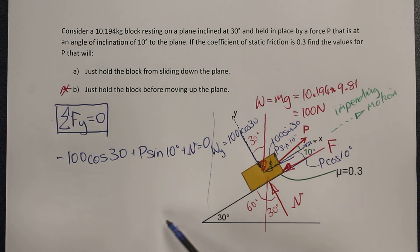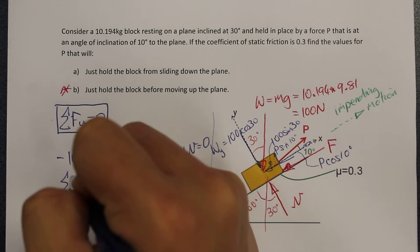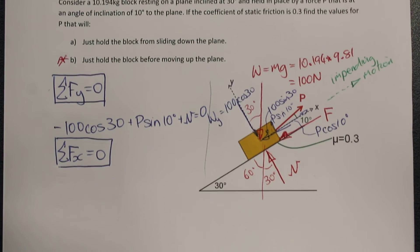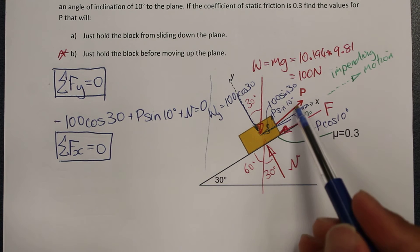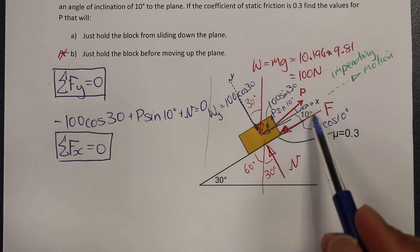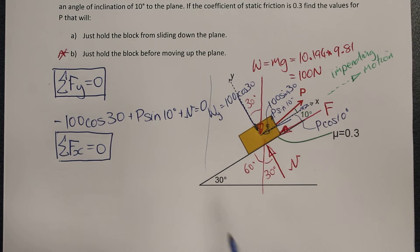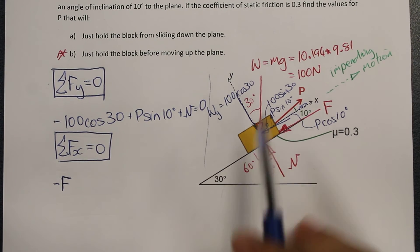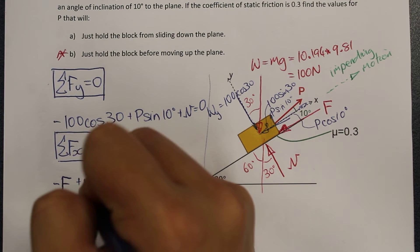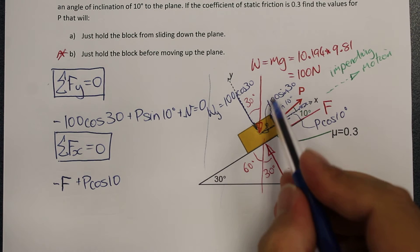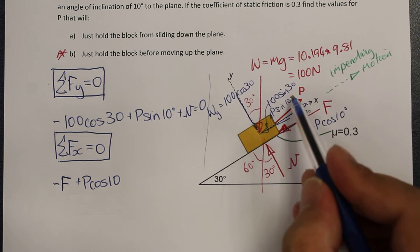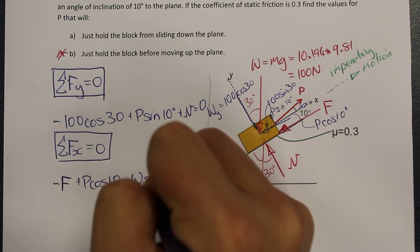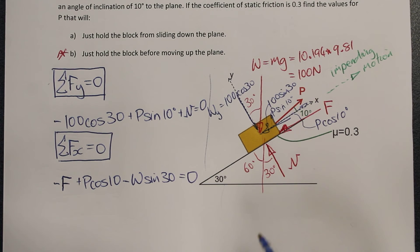Next, the summation of forces in the x direction should also be equal to zero. For this, we have P cosine 10 acting towards the right, F acting towards the left — so this is different from our previous video — and a component of the weight force as well. So: minus F, plus P times cosine 10, minus W times sine 30 equals zero.